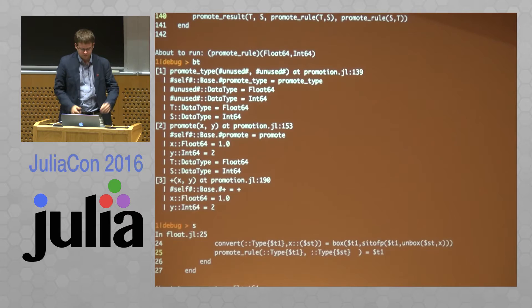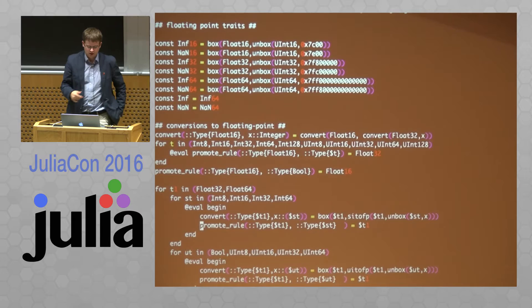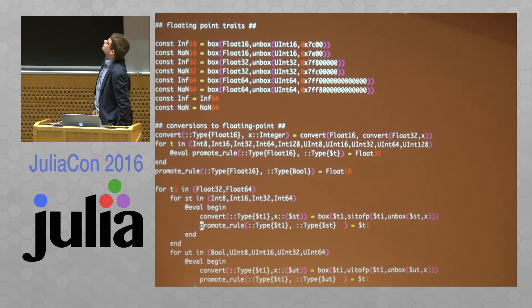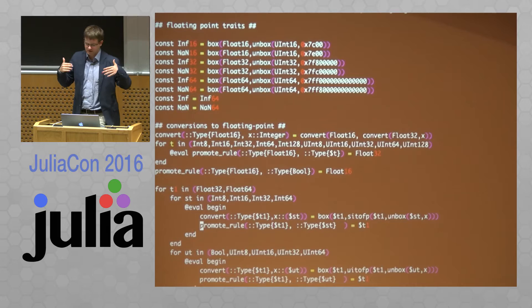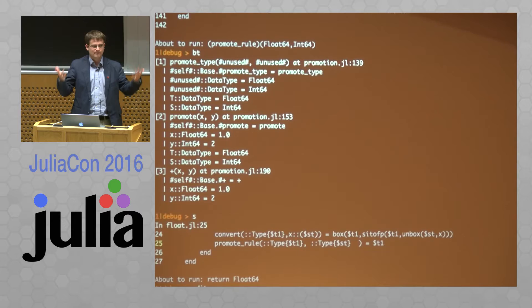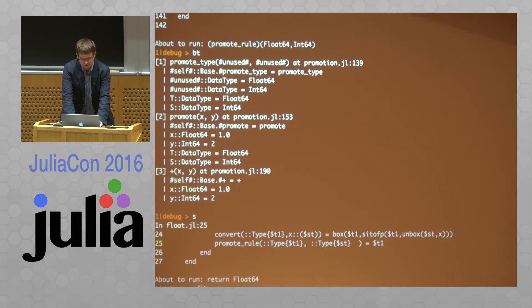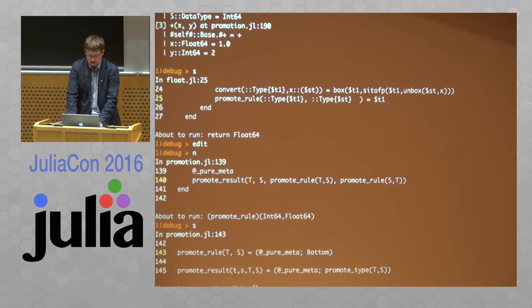Now we're in `promote_rule` — specifically `promote_rule` for Float64 and Int64. If we want, we can open it up in an editor to see more context. For those who read Julia code: this is just the promote rule that defines that if you want to promote a floating point and an integer, the result is just the floating point. Hopefully you get the idea of how you can use the debugger to find out what the code is doing under the hood, even if it jumps around a lot — which the promotion code does quite a bit.